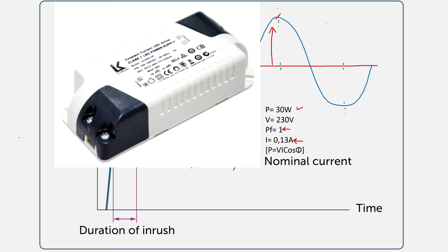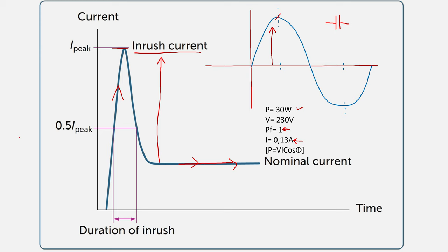Most LED floodlights utilize a driver circuit, and that driver circuit often uses a capacitor. A capacitor charges as soon as we apply a voltage across its terminals — and that is what this high inrush current is: the charging of the driver circuit. If we happen to turn on the floodlight at the zero crossing — maybe 180 degrees or zero — we would have a much lower inrush current, because the capacitor would charge as the voltage waveform increased.